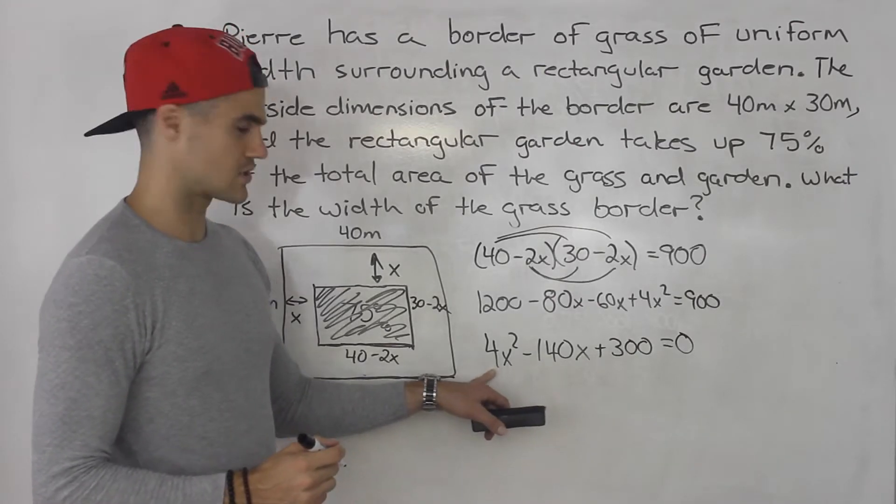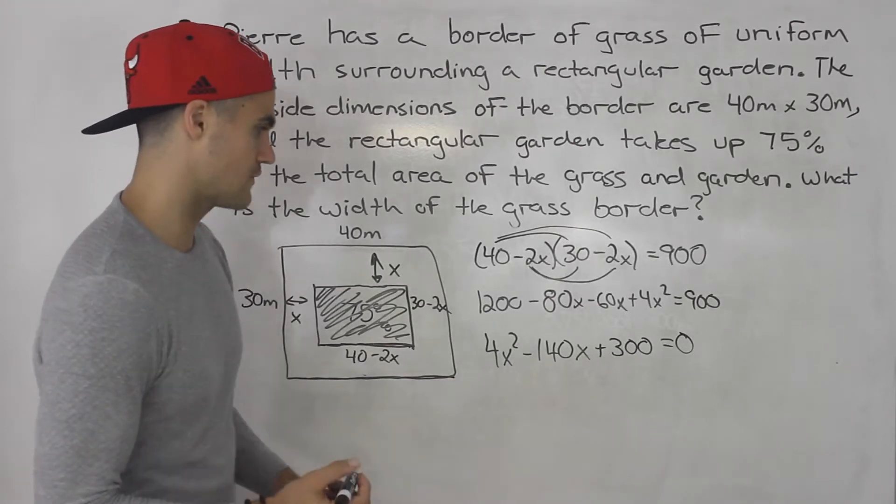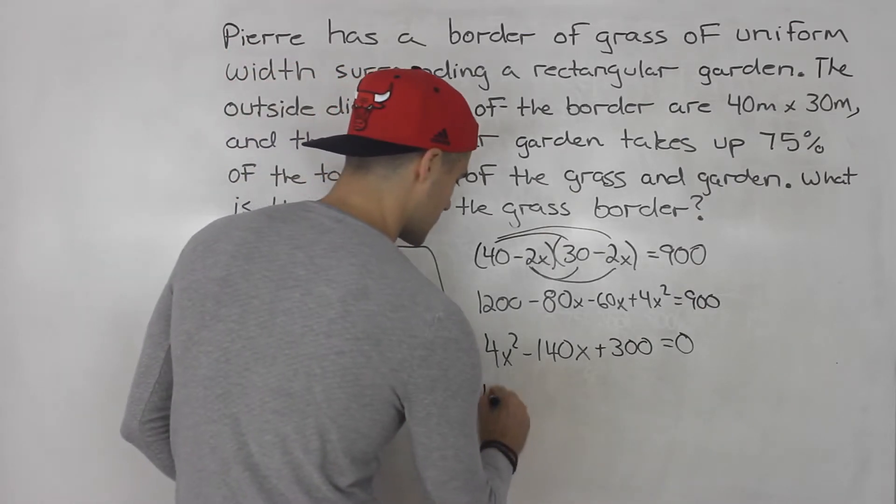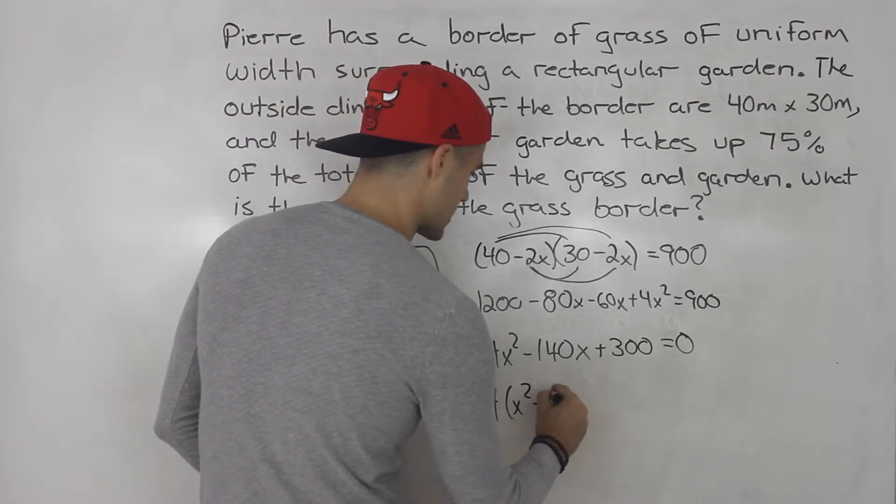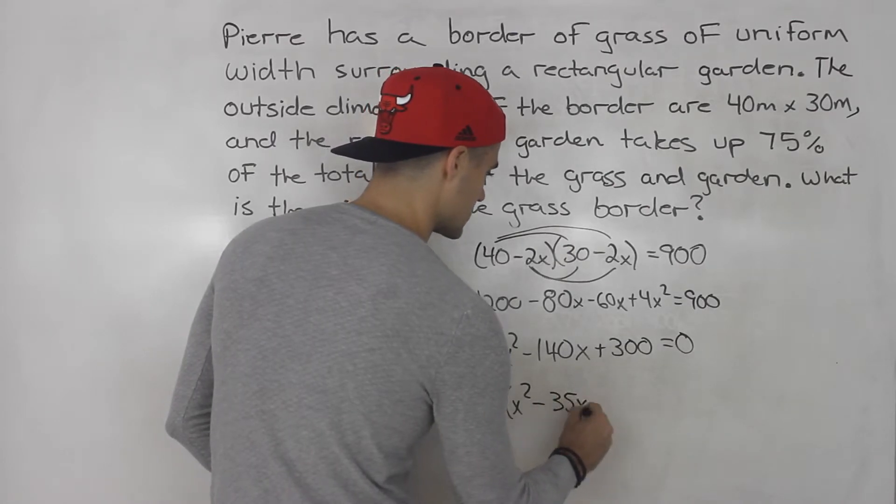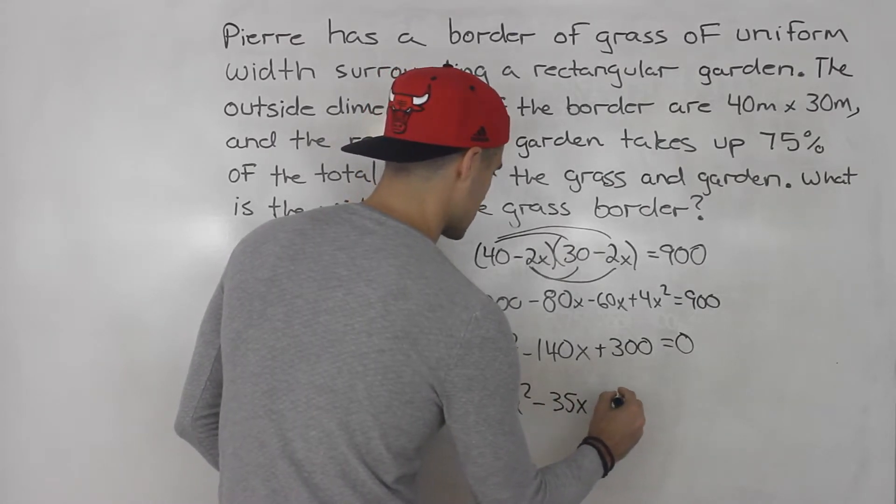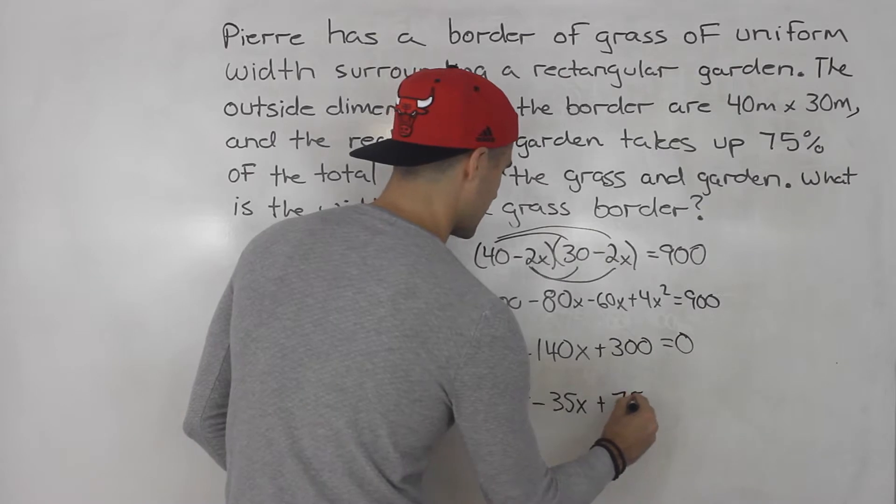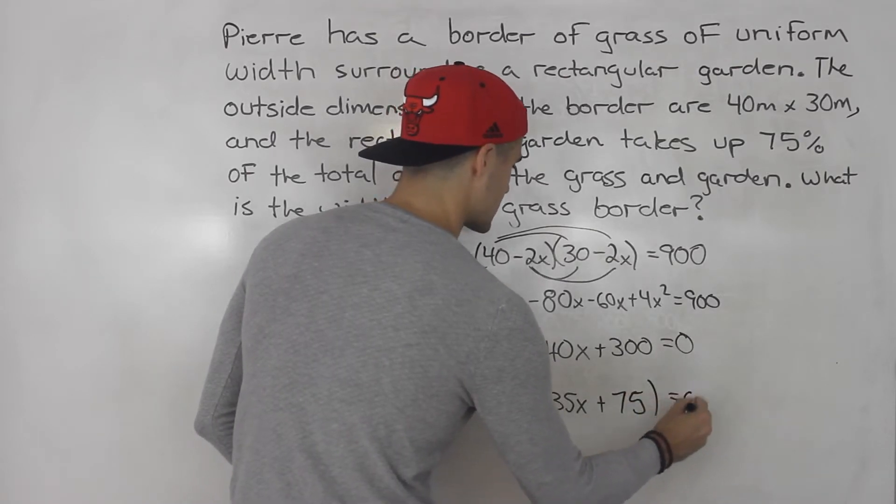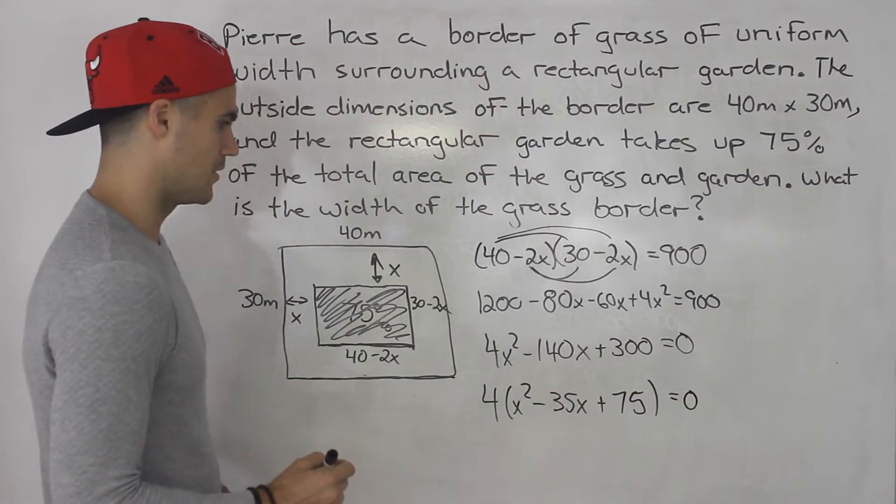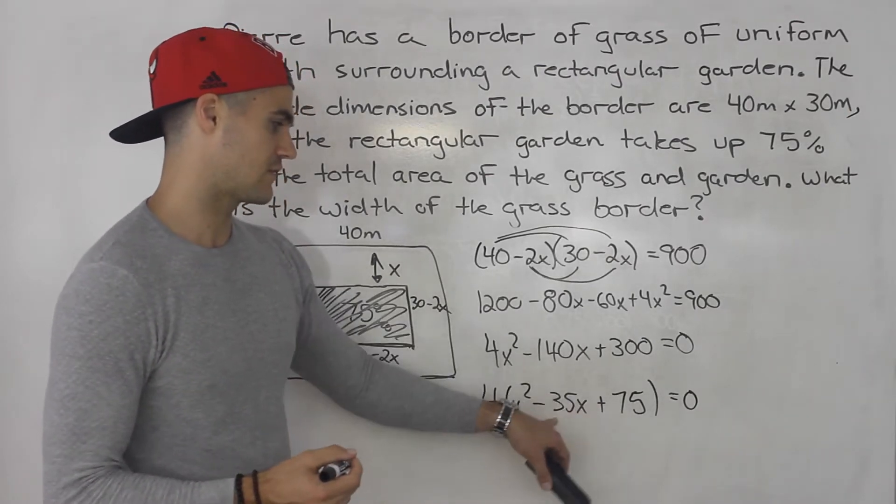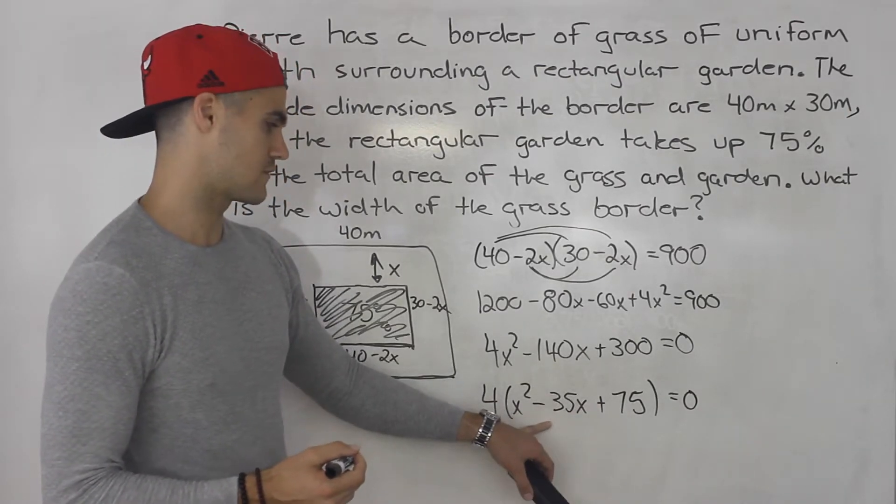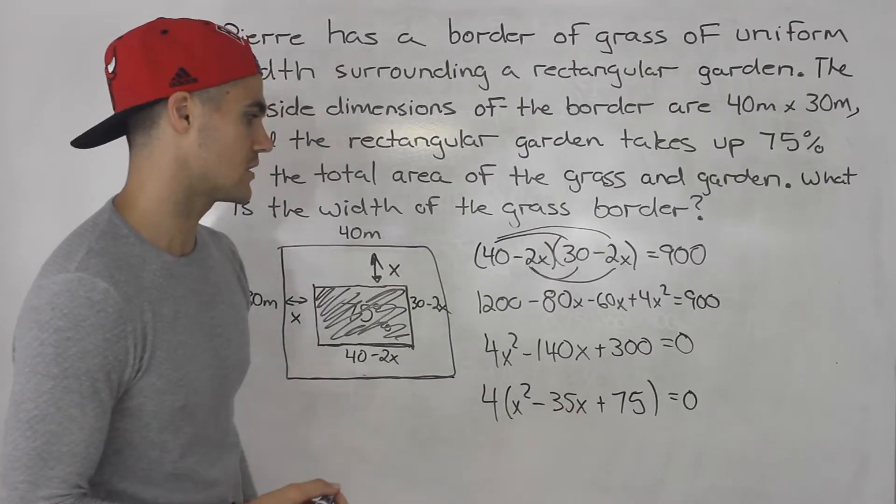And then from here you can solve this. You can try to factor it. We could notice how we could take out a 4. So we'll have x squared minus 35x plus 75. That's going to equal 0. But over here I don't think there are two numbers that multiply to 75 and then add up to negative 35. So I don't think this is going to factor smoothly.